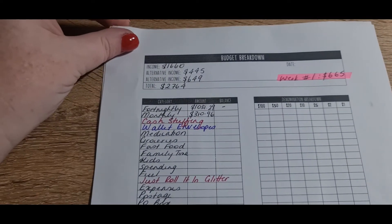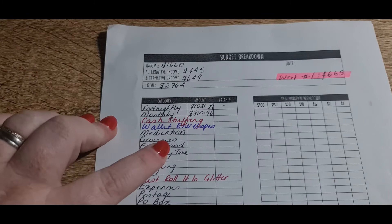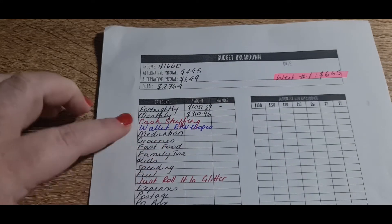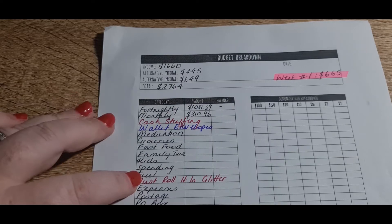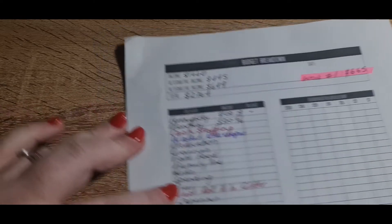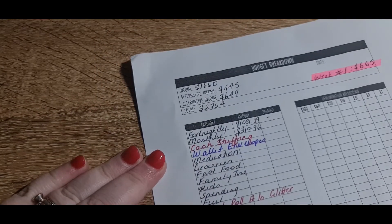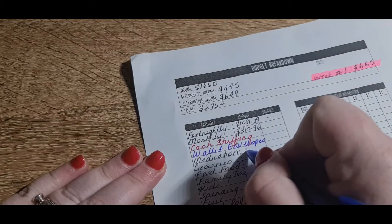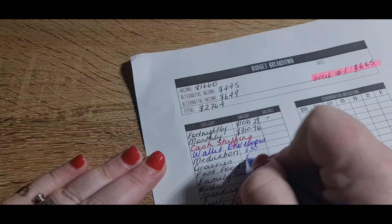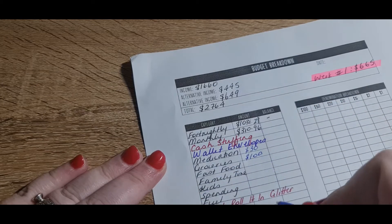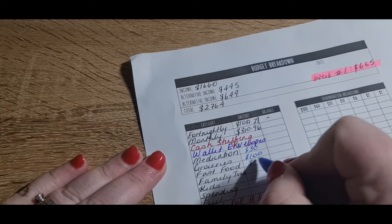So hopefully this works. Hopefully I don't make a mess of this form because I am an angled writer, but I'm really going to try. Okay, so these wallet envelopes, these are the ones I only stuff once a fortnight. So medication, that's for any scripts we have, and that'll be getting $30.